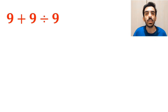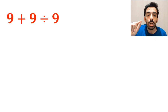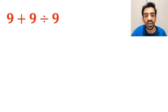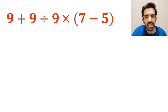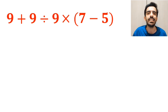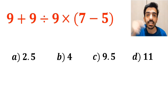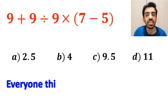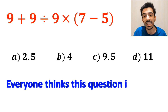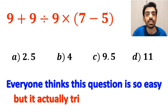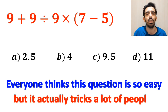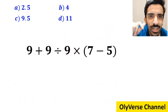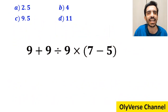What is the value of the expression 9 plus 9 divided by 9 times open parenthesis 7 minus 5 close parenthesis? Which option do you think is the correct answer to this question? Everyone thinks this question is so easy, but it actually tricks a lot of people. Let's take a closer look and solve it together.